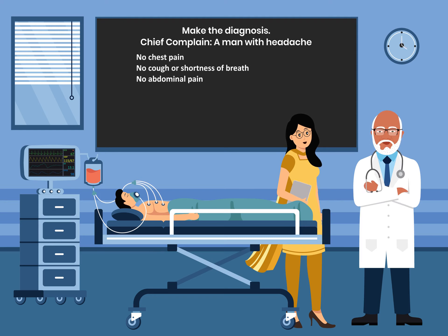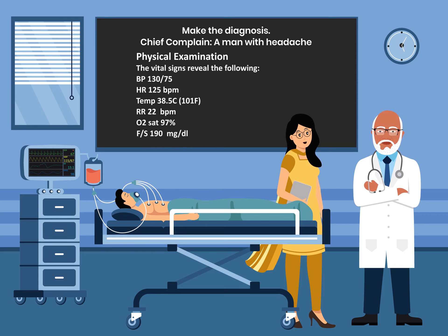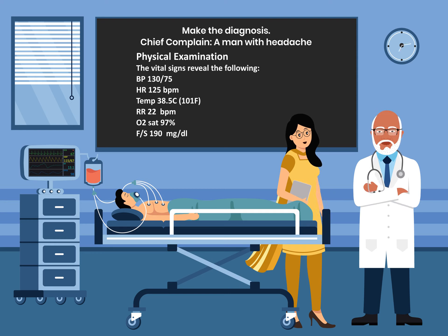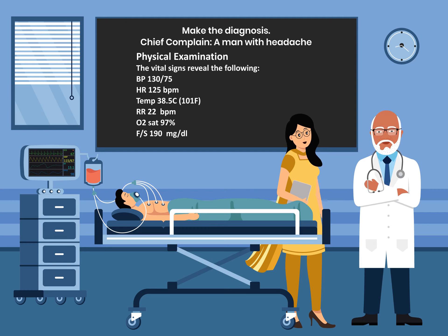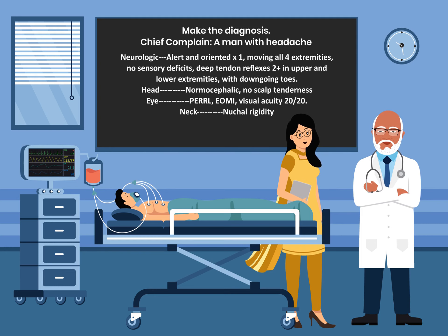There is no chest pain, no cough or shortness of breath, and no abdominal pain. On physical examination, vital signs reveal: blood pressure 130 over 75, heart rate 125, temperature 38.5 degrees Celsius (101°F), respiratory rate 22, oxygen saturation 97%, and finger stick glucose of 190 mg/dL.